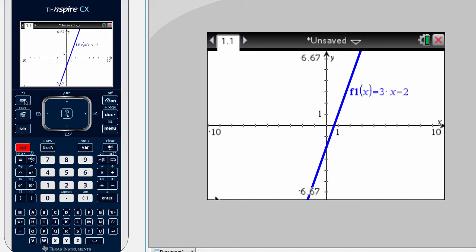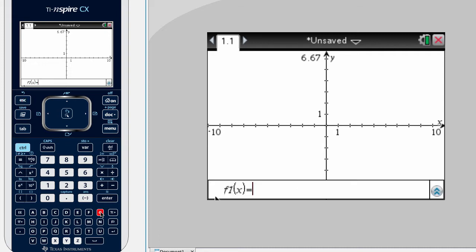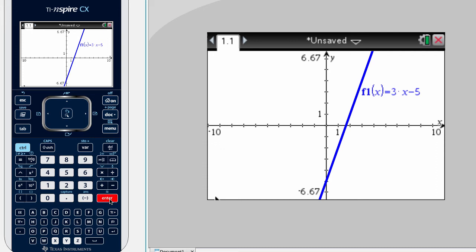Now, if we Ctrl-Escape and go backwards, the entry line goes away. So we need to get it back, so we select Ctrl-G, which brings it back up, and we can put in a different equation, let's say 3X-5, and hit enter, and it graphs it again.